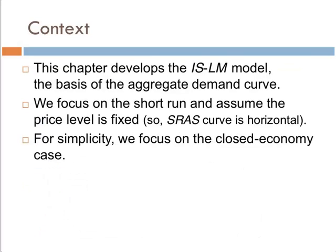In this chapter, we're going to develop the IS-LM model, which gives us a much more sophisticated basis for aggregate demand than does the quantity equation. We focus totally on the short run, so the price level is fixed and the short-run aggregate supply curve is still horizontal. We will eventually get to a point where prices are sticky but not completely fixed, giving us an upward-sloping short-run aggregate supply curve, but not yet. For simplicity, we also focus on a closed economy.